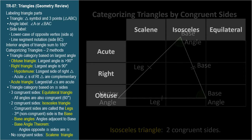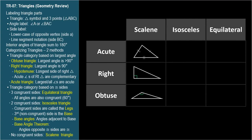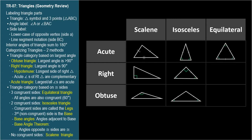We can combine the two methods of categorization to give descriptive names to different types of triangles. An acute scalene triangle has no congruent sides and all acute angles. A right scalene triangle has a right angle and no congruent sides. An obtuse scalene triangle has an obtuse angle and no congruent sides. An acute isosceles triangle has two congruent sides and an acute vertex angle. A right isosceles triangle has two congruent sides and a right vertex angle. An obtuse isosceles triangle has two congruent sides and an obtuse vertex angle. Equilateral triangles are in a category by themselves.